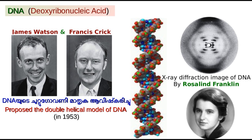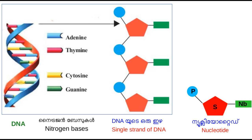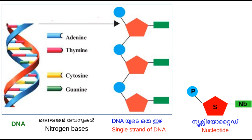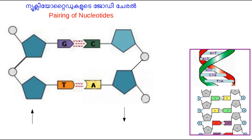DNA and RNA are two types of nucleic acids that are made of different kinds of nucleotides. A single nucleotide contains a nitrogen base, a sugar molecule, and a phosphate group. A nucleotide is the basic unit of nucleic acid. The DNA molecule is made up of four kinds of nucleotides: adenine nucleotide, thymine nucleotide, cytosine nucleotide, and guanine nucleotide — all with deoxyribose sugar and phosphate.